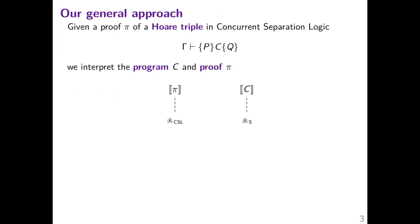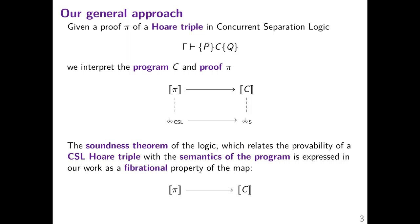Given such a proof pi of a Hoare triple in CSL, our approach is to interpret both the program and the proof in two double categories, which are induced by templates — the template CSL for the proof and the template S for the program. Those two templates are related by a forgetful morphism. We can also prove that there is always a map from the interpretation of the proof to the interpretation of the program. It is this map that we use to express the soundness theorem of the logic.